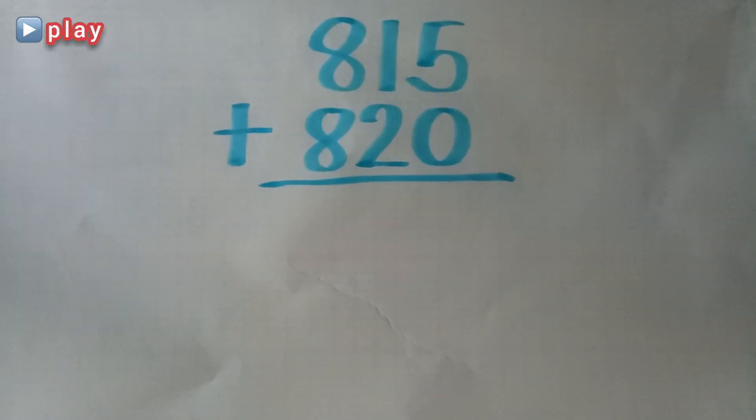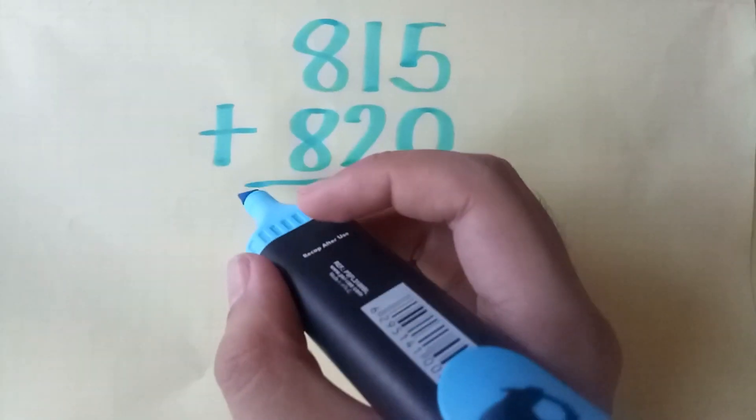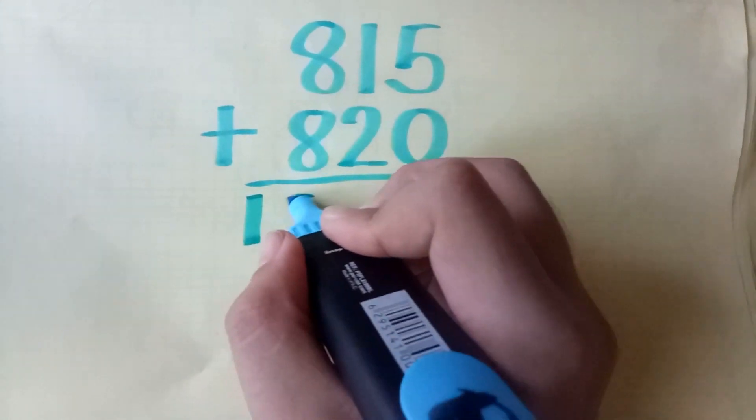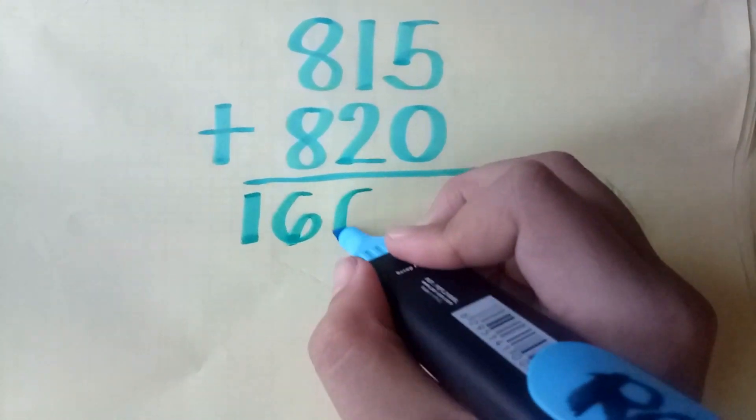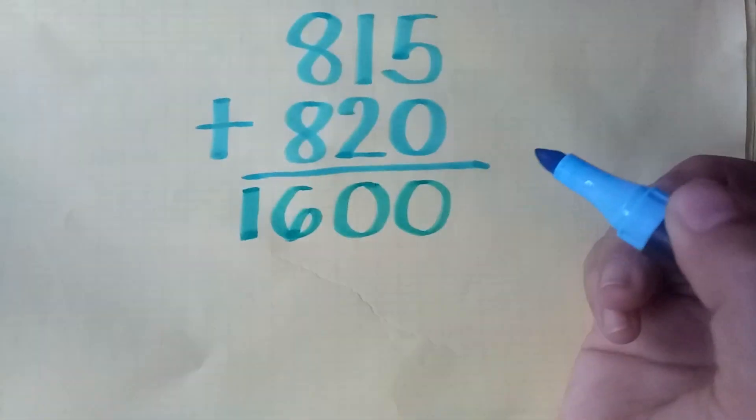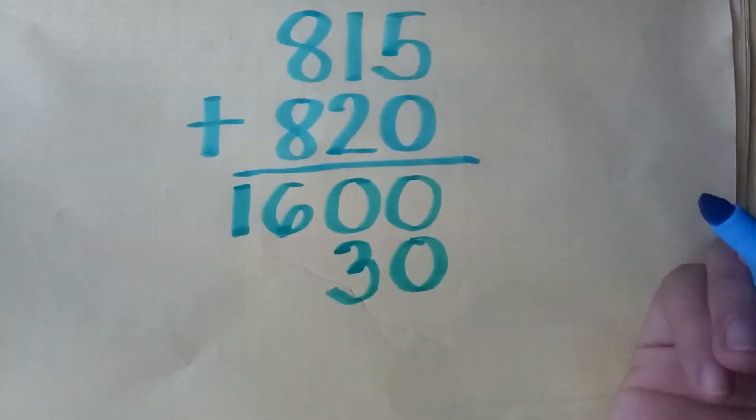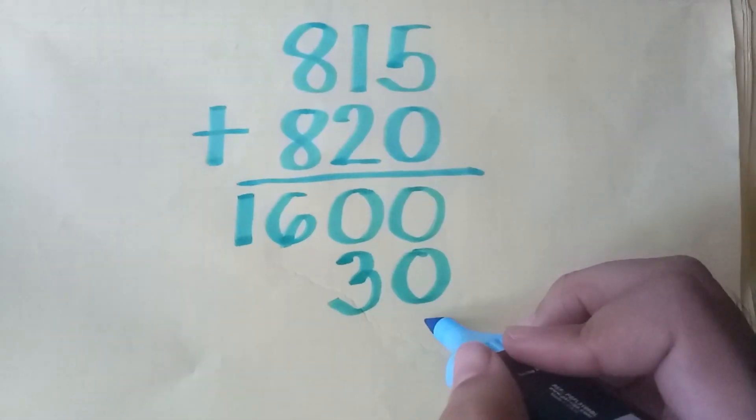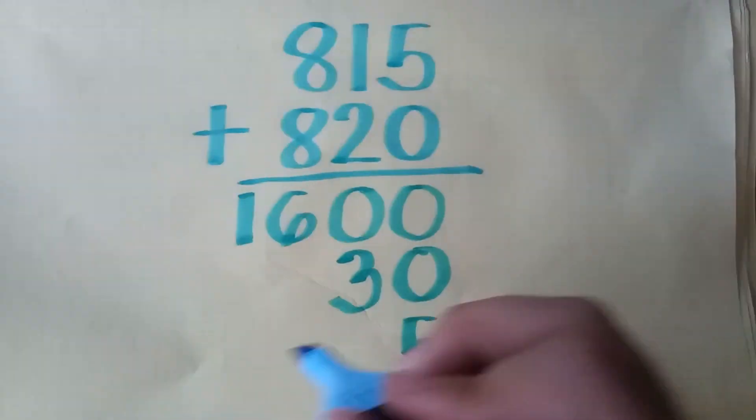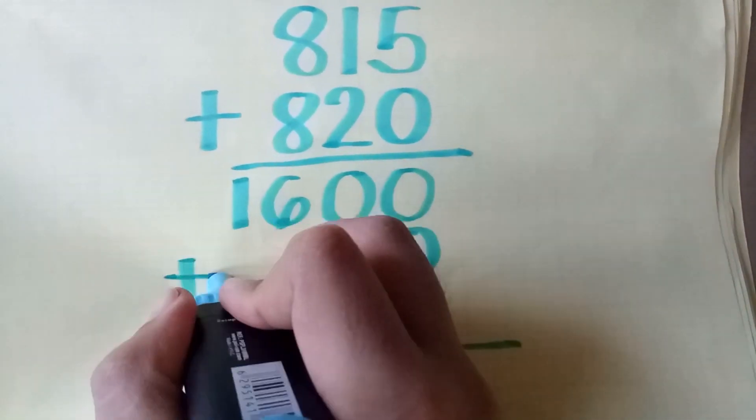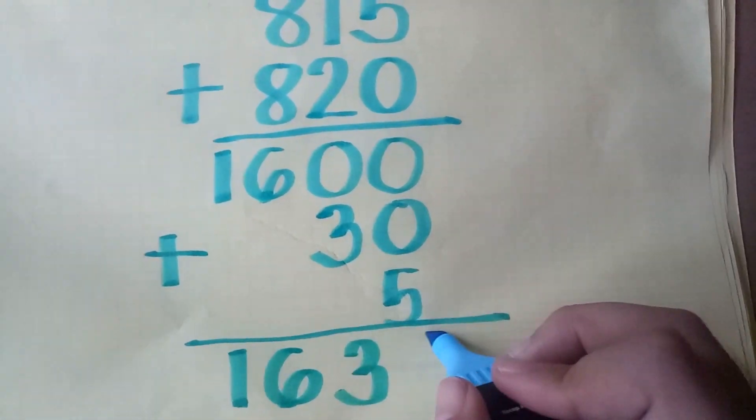Eight hundreds plus eight hundreds equals sixteen hundreds, or one thousand six hundred. One ten plus two tens equals three tens, or thirty. Five ones plus zero ones equals five. Mental math: one thousand six hundred thirty-five.